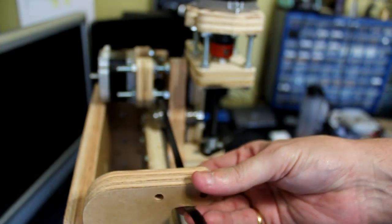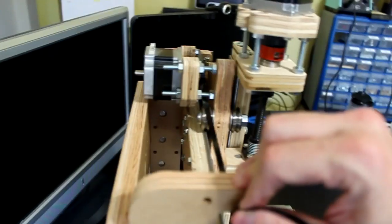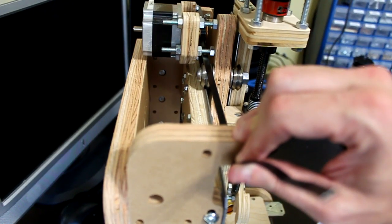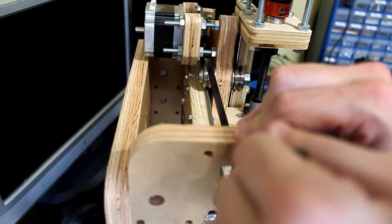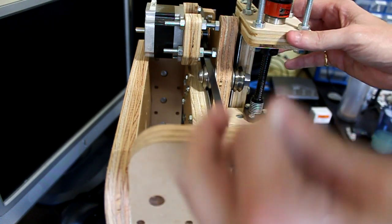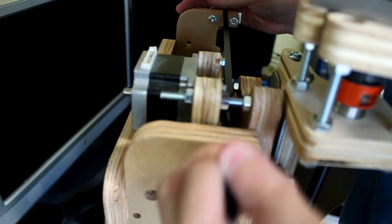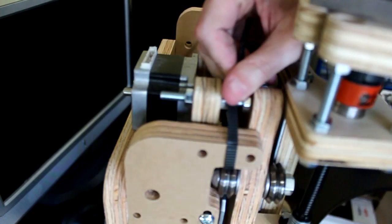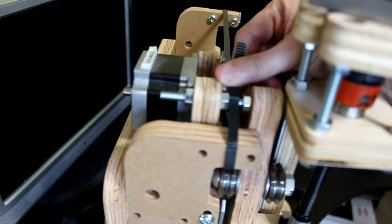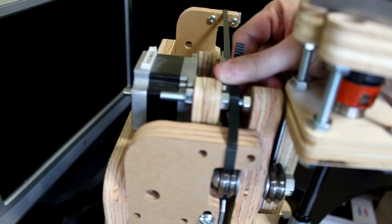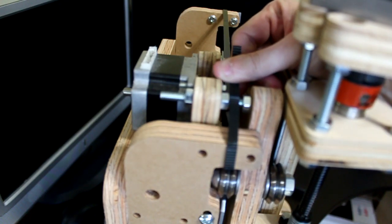This side is where the timing belt routes underneath the idler bearings and will also go underneath the wood section that you see in the video. It is best to work with the z-axis assembly close to the end where you're working to determine proper alignment of the timing belt and the position where it should be located between the wood and the bracket.